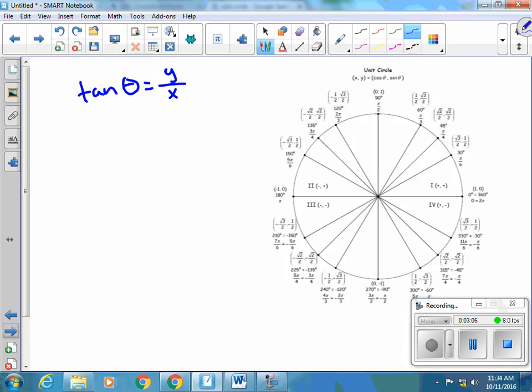So for instance, if I wanted tangent 45, I would go to the 45 degree measure, which is here, and I'm looking at those coordinates.